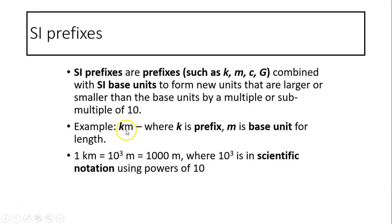For example, km, that's kilometer. K is the prefix, m is the base unit. So km means K is 10 to the 3, right? That's a multiple of 10. Submultiples of 10. That's a thousand meters. 10 to the 3 - this is scientific notation.